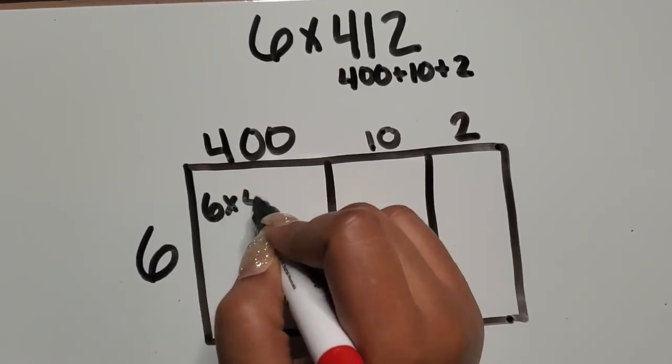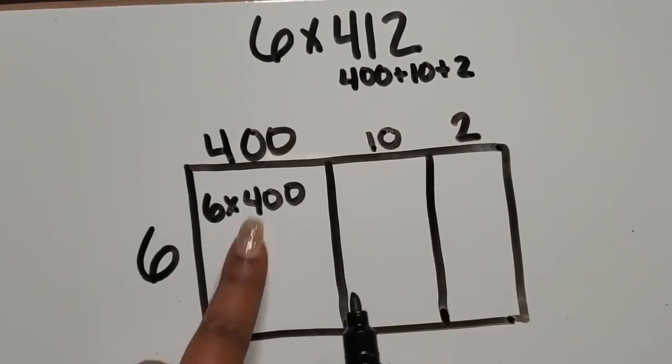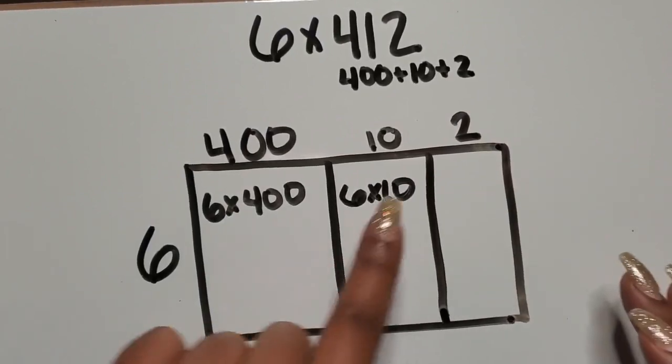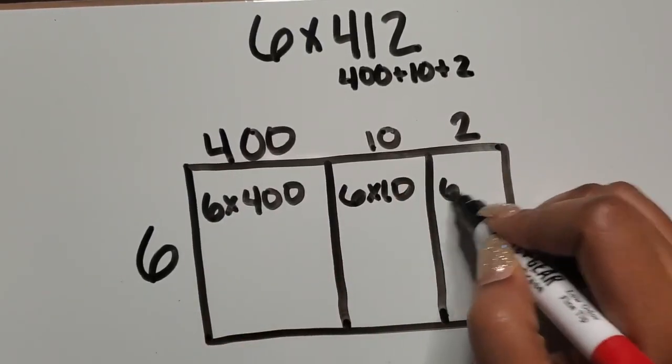So 6 times 400, that's the first expression, then 6 times 10 or 6 rows of 10, and then 6 rows of 2.